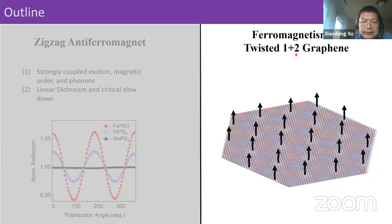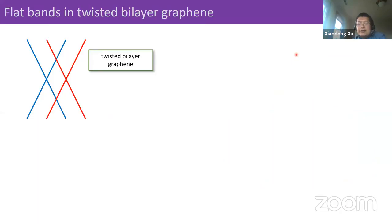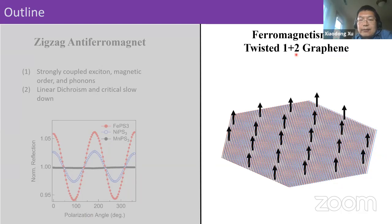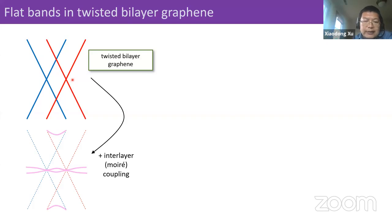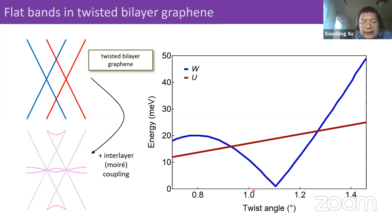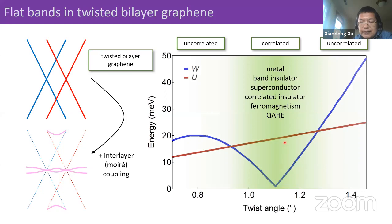Now I switch to my second topic: ferromagnetism in twisted 1+2 graphene. There are very interesting flat bands in twisted bilayer graphene. In twisted bilayer graphene with no interactions, we have two Dirac cones. As we turn on interactions, hybridization can open a gap and form low energy bands. By tuning the twist angle, there's a magic angle where the bandwidth is really narrow and the interaction is strong, giving metals, insulators, superconductors, and ferromagnetism.